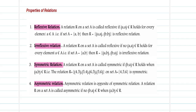First, the reflexive relation. A relation R on a set A is called reflexive if (A, A) belongs to the relation for every element A belonging to set A. So if I have the set {A, B}, I need the pairs (A, A) and (B, B) to be inside the relation, and then I can call this relation R to be a reflexive relation.